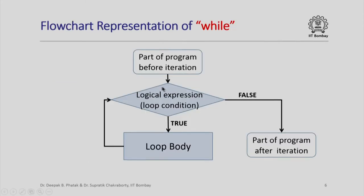As a flowchart, this can be represented as follows: we have the part of the program before iteration, the part after iteration, and we check the loop condition. If it is true we go through the loop body and check the condition again. At any time the loop condition becomes false, we exit from the loop and execute the part of the program after iteration. Here is a simple animation of how control might flow through a while loop — the red dot indicates control flow moving around the loop a few times before coming out.